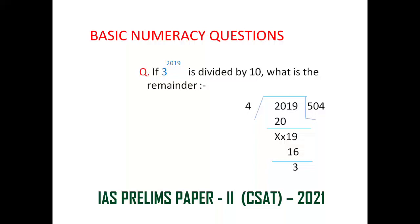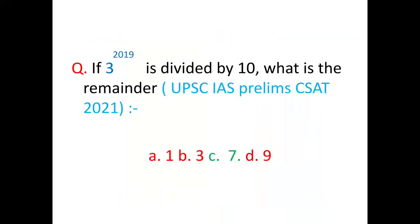In this tutorial we will see a question on the theory of cyclicity. This question was asked in IAS prelims paper 2 CSAT 2021. The question is: if 3 to the power 2019 is divided by 10, what is the remainder? Options are given and option C, 7, is the answer.